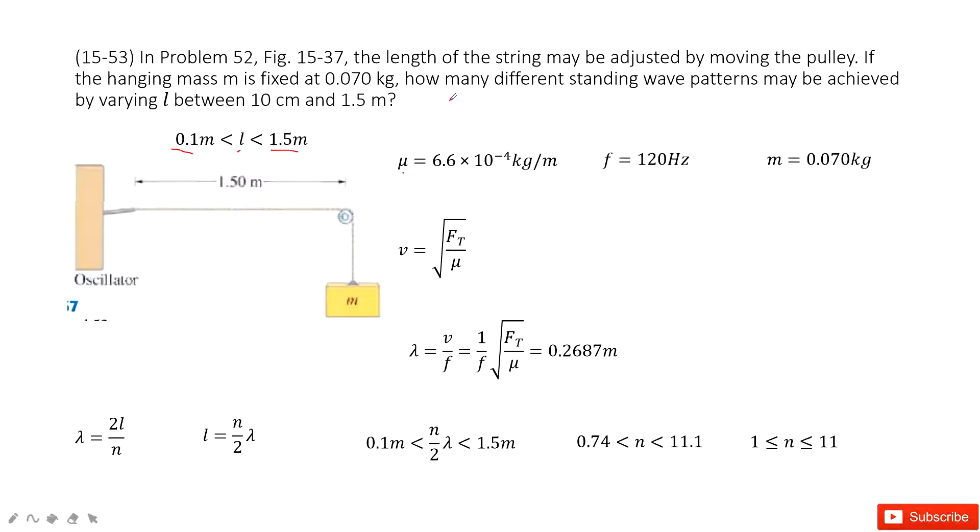So this asks you to find the n number. Now when we want to find the n number, how can we do that? We can consider the equation in our textbook. Lambda equals 2L over n, right?